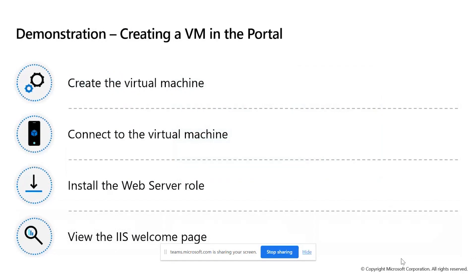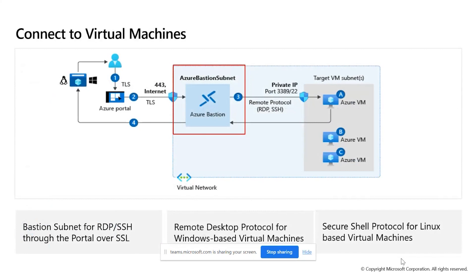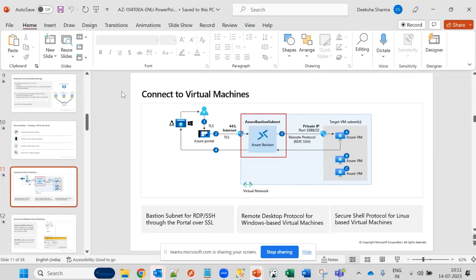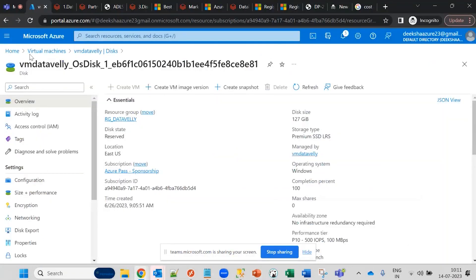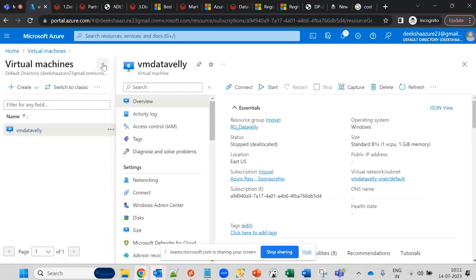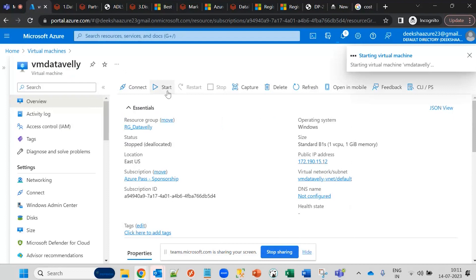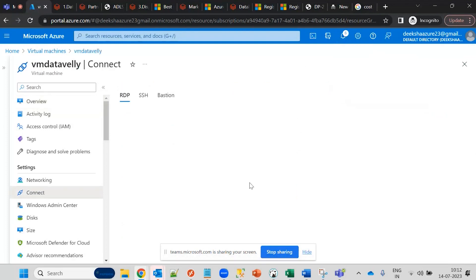Try RDP — Remote Desktop Protocol — to connect to your virtual machine. Now let's look at how to configure and authenticate access to a virtual machine. In the portal, you download the RDP file to connect to a Windows VM. The virtual machine has been deployed, and once it starts, you can use the connect option.